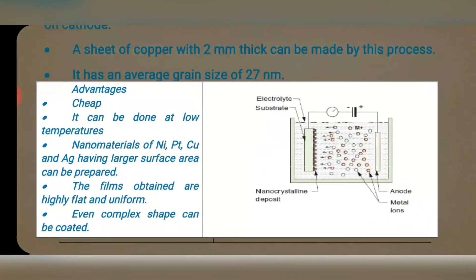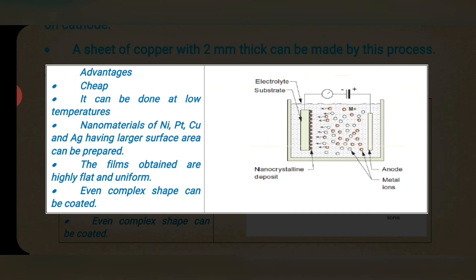Advantages of this process: This is the cheapest process. It can be done at low temperature. Nanomaterials of nickel, platinum, copper and silver having larger surface area can be prepared. The films obtained are highly flat and uniform. Even complex shapes can be coated by using this process. So these are all the advantages of electro-deposition process.